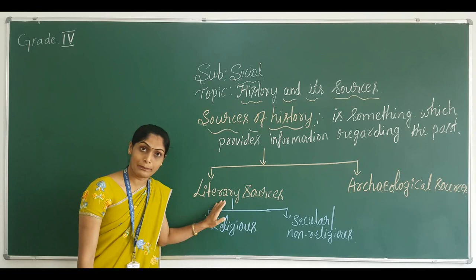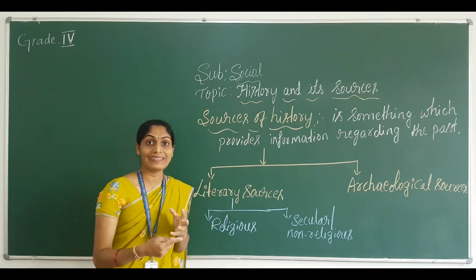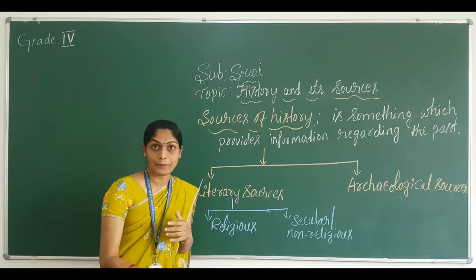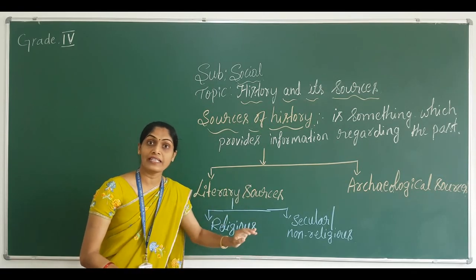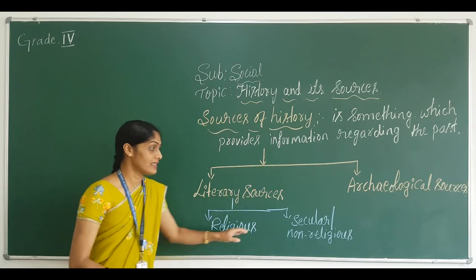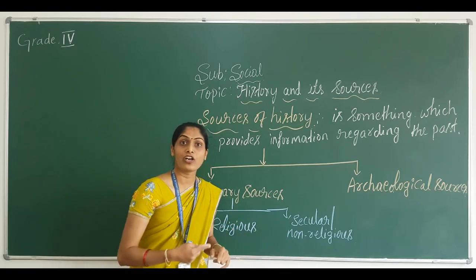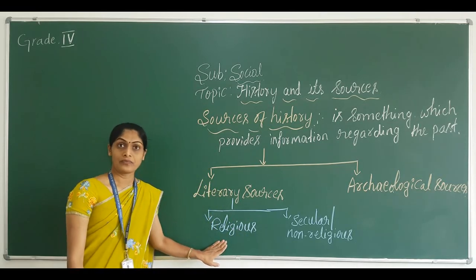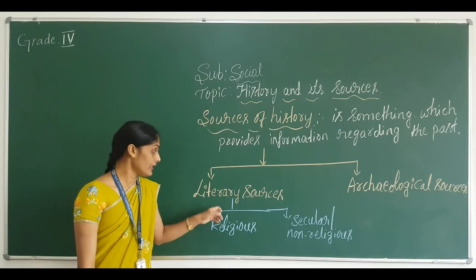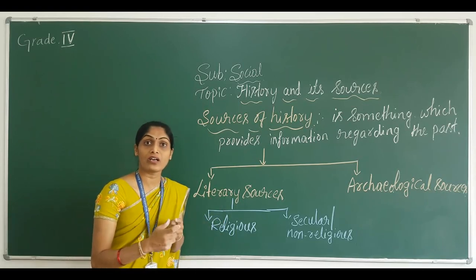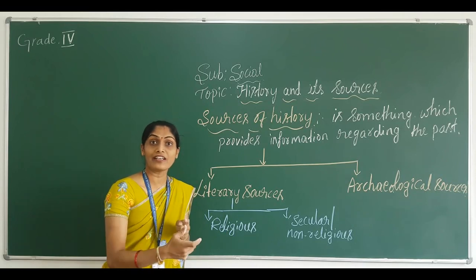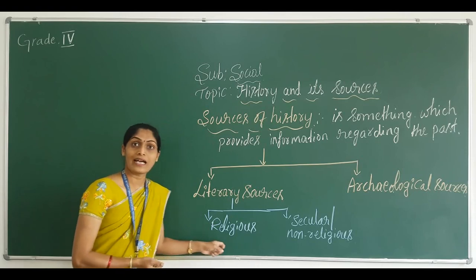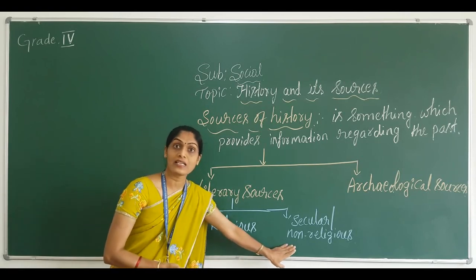Literary sources is nothing but some writings are available, or written records are available. That written records are again divided into religious and non-religious, or else we call it as secular. Literary sources means written records are available, and that written records are again divided into two parts: religious as well as non-religious or secular.